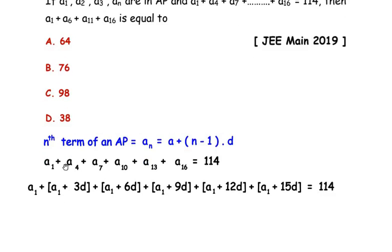So we have written the first term is a1 in place of a, plus n is 4 in this case, so 4 minus 1 is 3 times common difference d. Similarly for a7 we have written a1 the first term plus 7 minus 1 is 6 times d. We should repeat the same steps for a10, a13, a16 using this formula. All of them will be equal to 114.